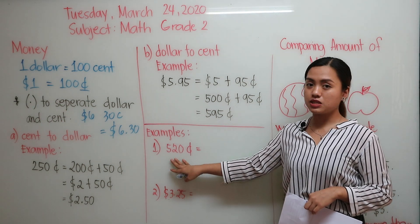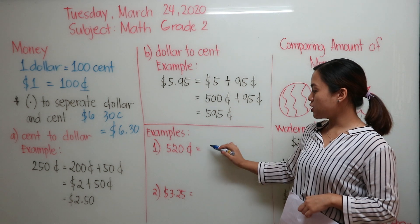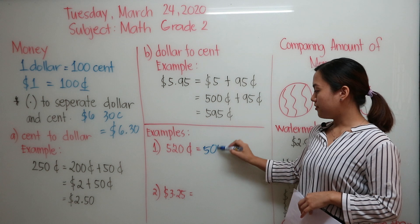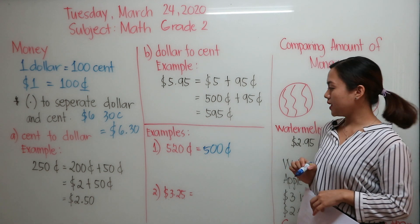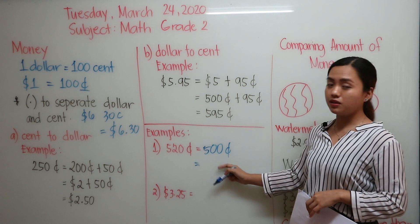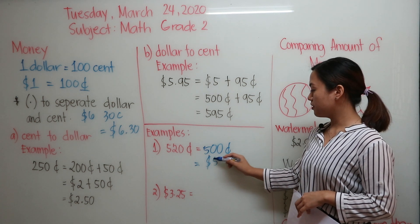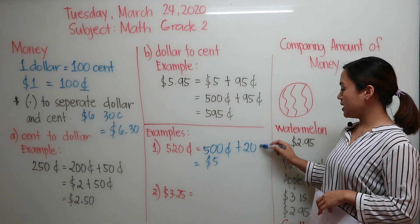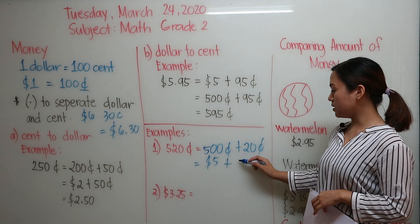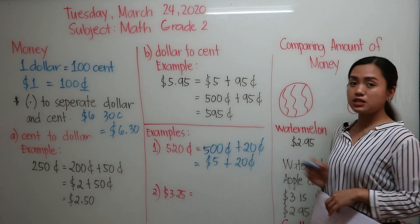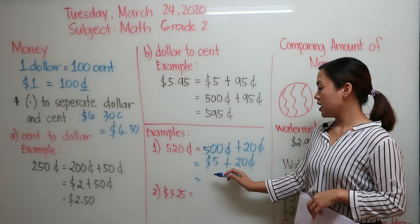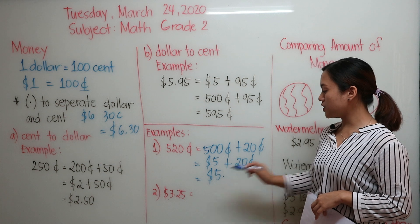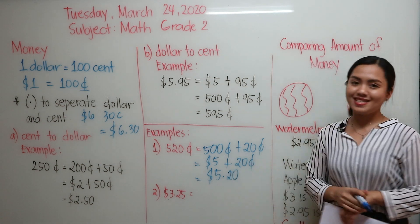We have here more examples. So we have here 520 cents. We are going to write whole numbers first. So we have here 500 cents, because if you are going to convert this to dollar, it will be $5 plus 20 cents. So all you need to do is to copy it here, 20 cents. And if you're going to write it as a whole, then you're going to use only the dollar sign. So we have $5, decimal point, and 20 cents.